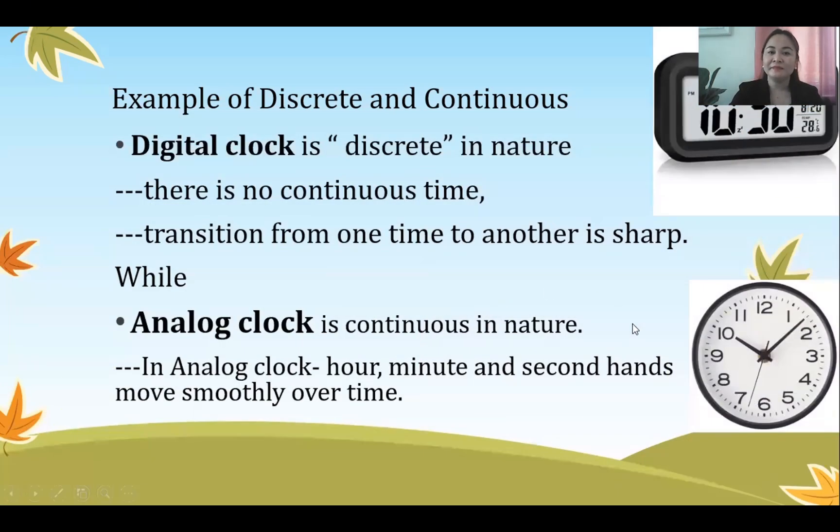Another example we have in a clock, digital clock, it's discrete in nature. Why? In a digital clock we have here, there is no continuous time. We have a transition from one time to another is sharp like 10:30, 10:31, and so on.